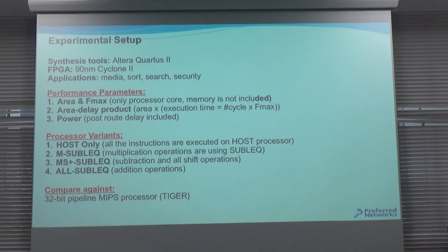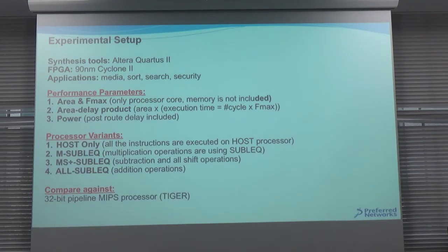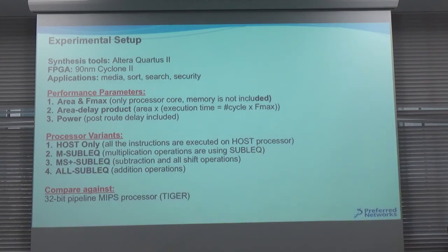For the experimental results, we used Altera Quartus 2 and a Cyclone 2 FPGA — a very old FPGA. We tried different applications from media, source search, and security domains. The performance metrics compared are area, Fmax (maximum synthesis frequency), area-delay product, and power consumption.